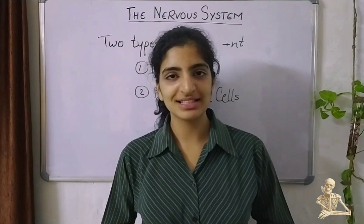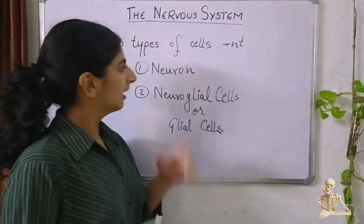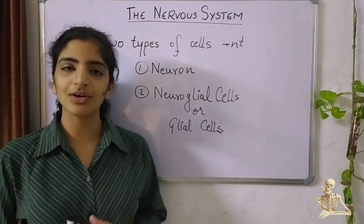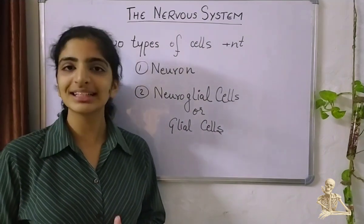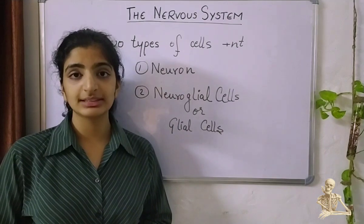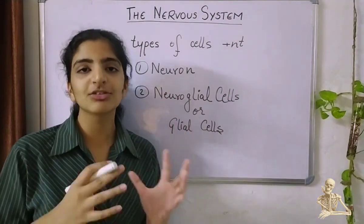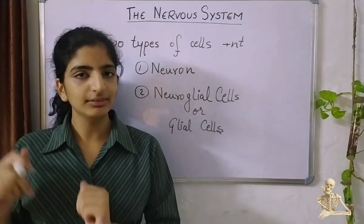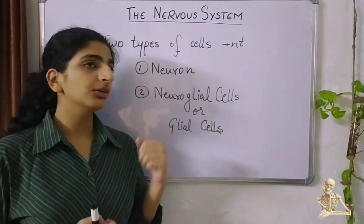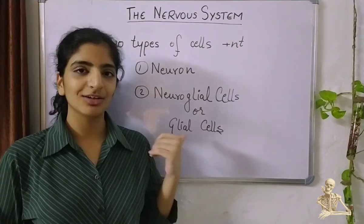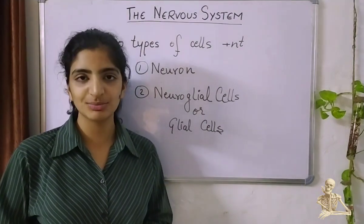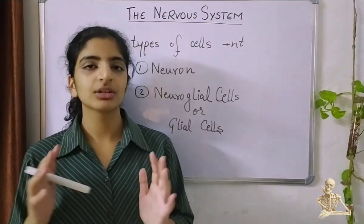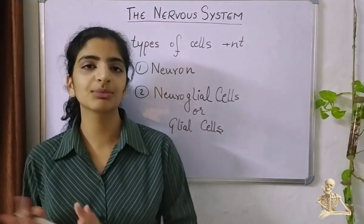There are two types of cells present in the nervous system. The first type is the neuron and the second is the neuroglial cells, also known as the glial cells. The neurons are the basic units that actually receive nerve impulses and transmit them to the next neuron or the receptor organ. The neuroglial cells, on the other hand, act like the mother of the neurons — they help in the nourishment and all the exchanges between the neuron and the different parts of our body.